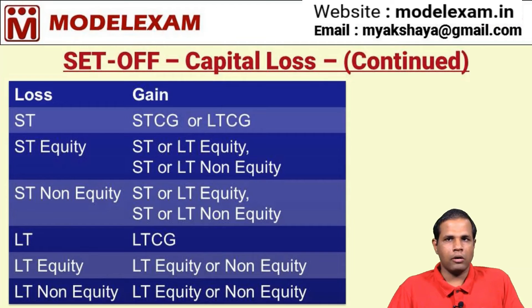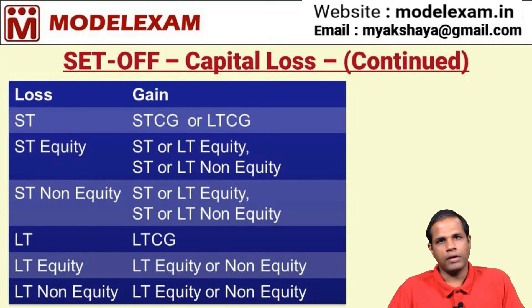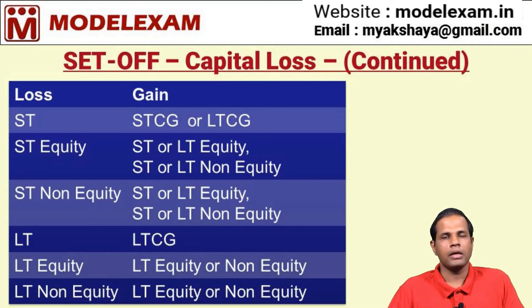Now for long term loss: long term loss can be adjusted only against long term capital gain. So long term equity loss can be adjusted against long term equity gain or long term non-equity gain. Similarly, long term non-equity loss — that is, loss from schemes other than equity — can be set off against long term equity gain or long term non-equity gain.